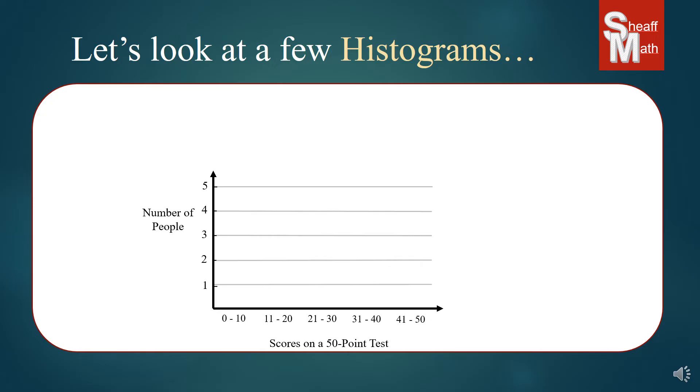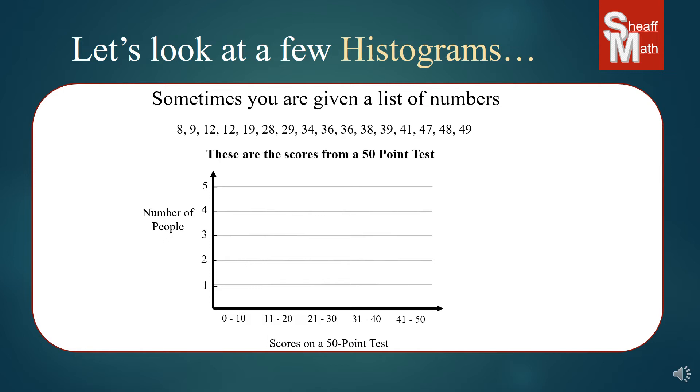Now, sometimes, you're just given a list of numbers. These numbers right here are, luckily, they're in order. You don't always get them in order. And this is scores from a fifty-point test. And it shows the number of people that got these tests and then their score categories. And this one goes zero to ten, eleven to twenty. So it goes by tens.